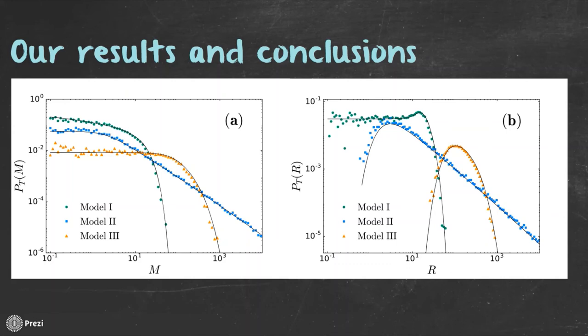In general, we observe both similarities and differences among the three models and also in comparison with standard Brownian motion. In particular, we note that the distributions of the maximum are generally broader than the ones of the range. Very interesting is the analysis on the typical behavior of the probability density function of the extreme values in comparison to the ensemble one.